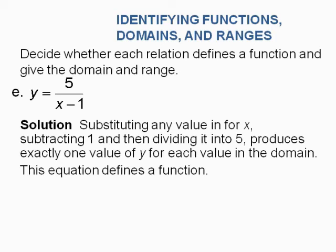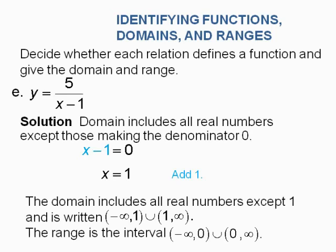And one last example before we roll on. Decide whether this is a function. Substituting any value in for x and subtracting 1 and then dividing it into 5 produces exactly one value of y for each value in the domain. So this does define a function. Notice there are some forbidden numbers for x. You can't put x is 1 in there or you'll have an undefined fraction here. Fractions, you have to make sure that no number or numbers cause any denominator to be 0. And 1 is that forbidden creature here. So next to 1 down here, once we set that bottom equal to 0 and solve, x can't be 1.